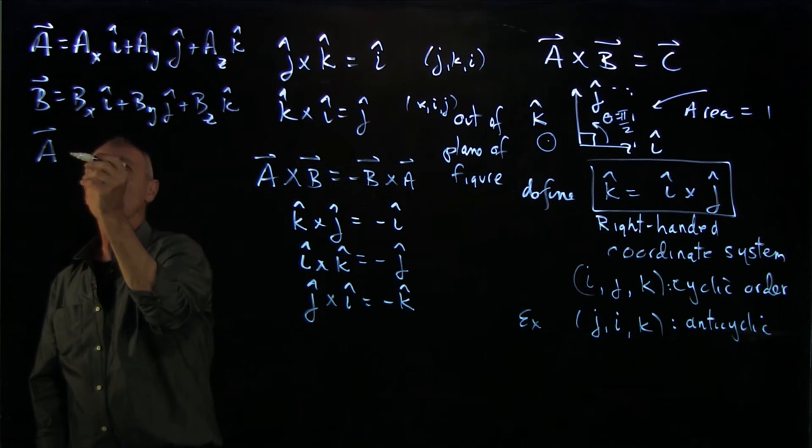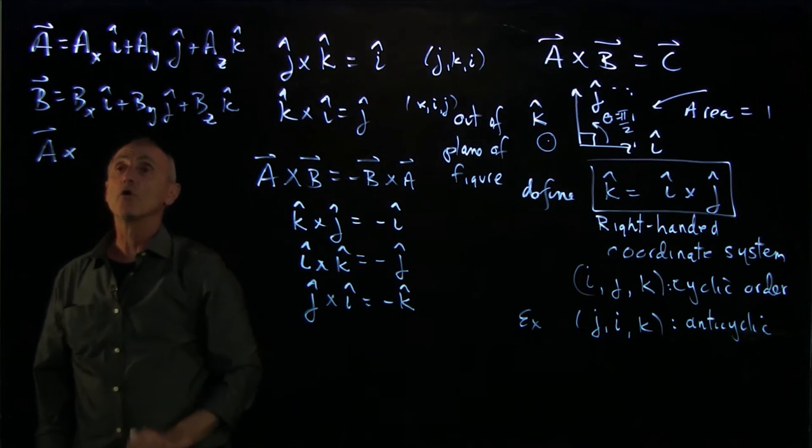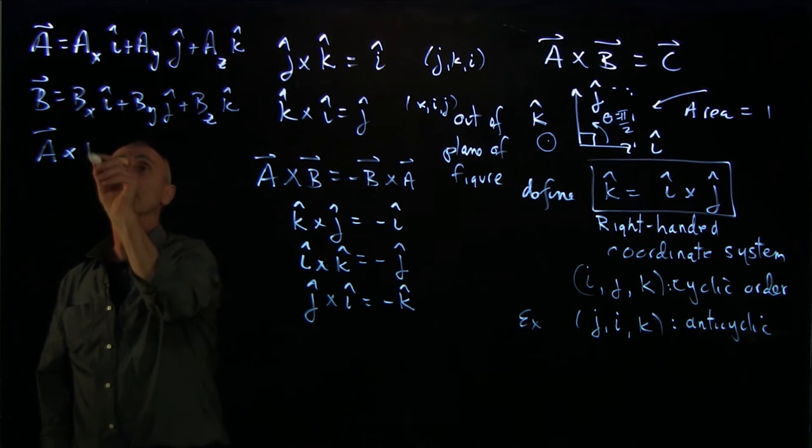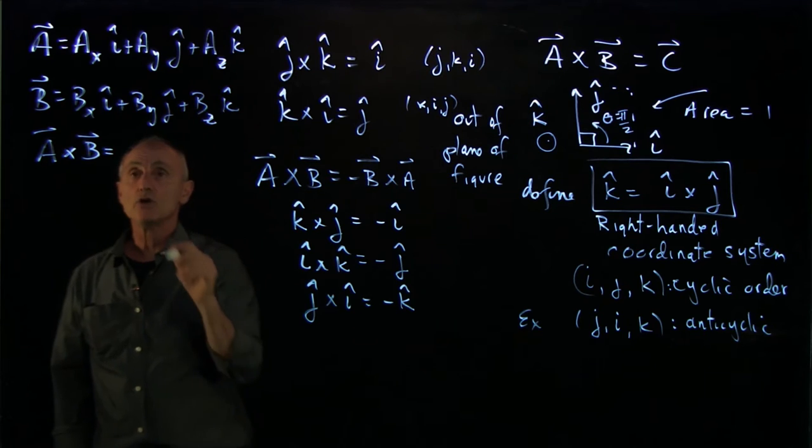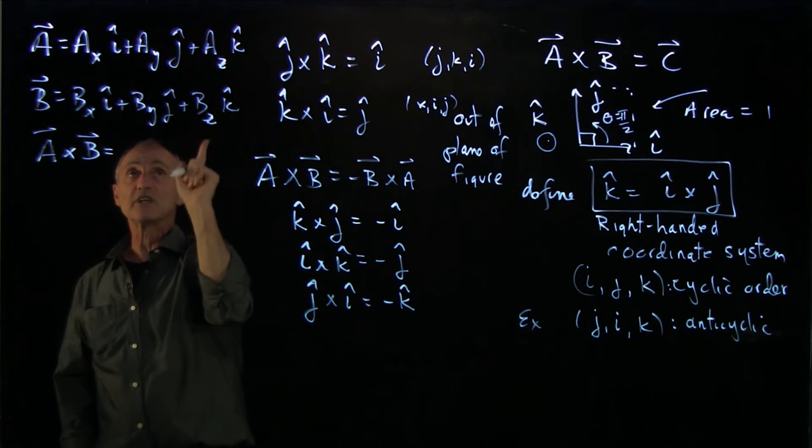and now I want to compute the cross product of these vectors to get the new one. Notice that there's going to be six terms.